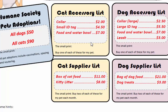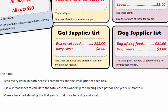You have to buy these accessories one time. The second box shows the ongoing expenses. A box of cat food and kitty litter — and the small print says to buy two of each of these for your pet each month, so we'll double that expense each month. The dog has expenses too — dog food and dog treats.